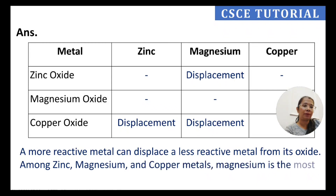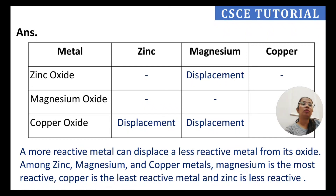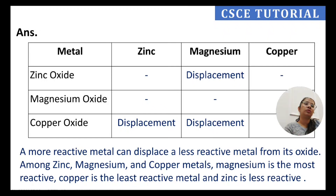Among zinc, magnesium, and copper: magnesium is the most reactive, copper is the least reactive, and zinc is in between. When arranged in decreasing order of reactivity: magnesium > zinc > copper. Zinc displaces copper from copper oxide because zinc is more reactive than copper. Magnesium displaces both zinc and copper from their oxides.